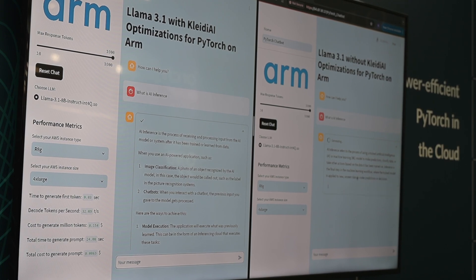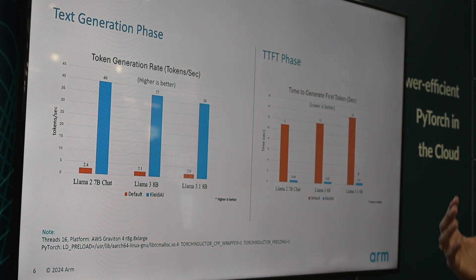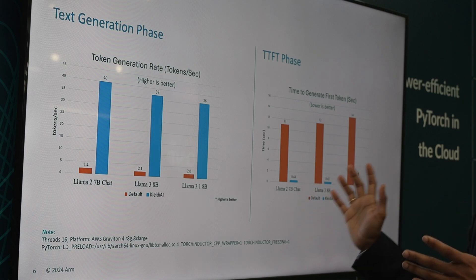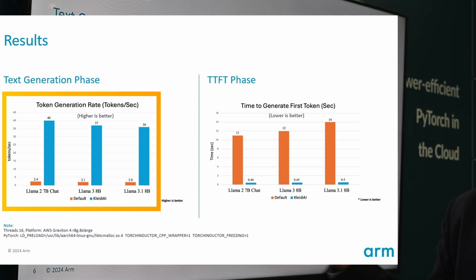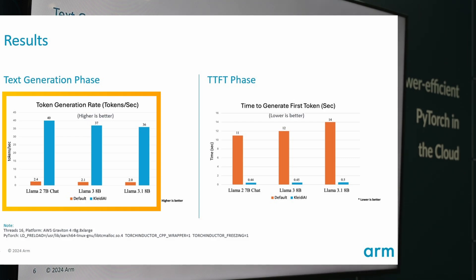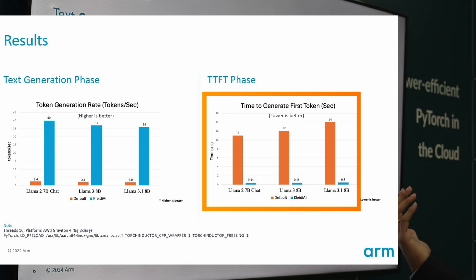We can jump back to the presentation while the slow chatbot finishes. Here are the dedicated benchmark results. For token generation rate, the default configuration produces about 2 to 3 tokens per second. When you integrate Kleidi into your tech stack for gen AI, you see a massive performance uplift to 35 to 40 tokens per second. For time to generate the first token, it goes from up to 10 seconds by default down to about 0.5 seconds with Kleidi integration.